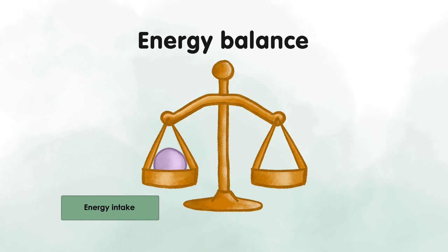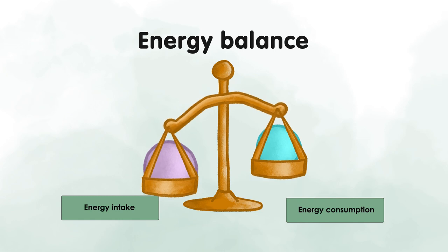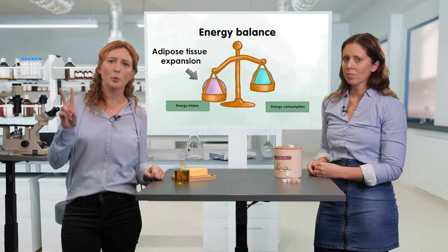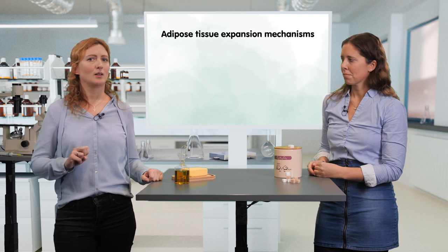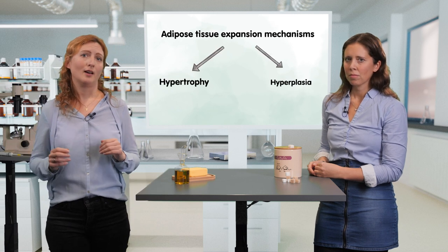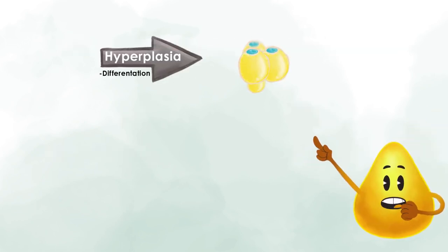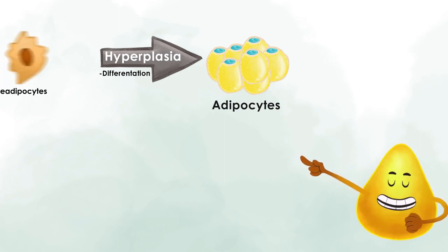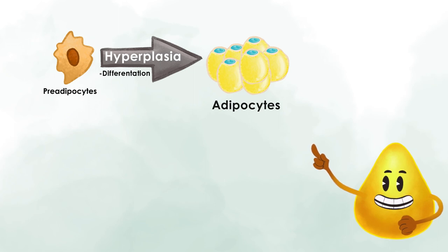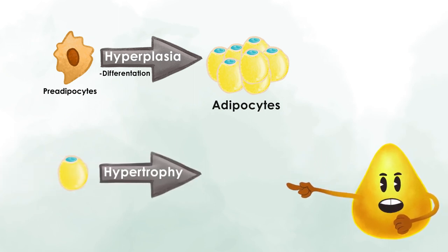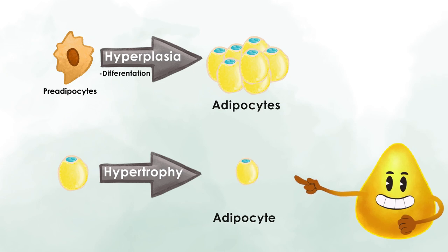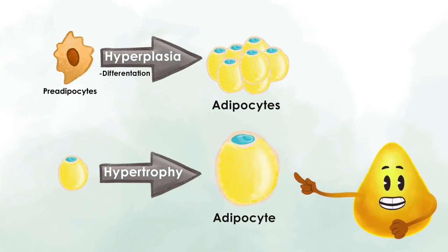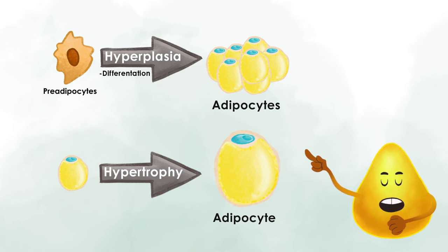When energy intake exceeds energy consumption, adipose tissue needs to expand. There are two ways adipose tissue can expand, called hypertrophy and hyperplasia. Hyperplasia describes the recruitment of precursor cells, so-called pre-adipocytes, and their differentiation into adipocytes. Hypertrophy is when already existing adipocytes take up more and more fat and get bigger — but unfortunately there is a limit to that.